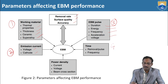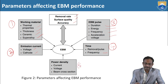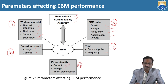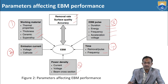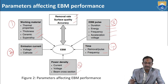The fourth parameter category is time, which includes removal of pulse and frequency. The fifth is power density, which includes current, voltage, and beam cross section. These three are important parameters of power density that influence the performance of electron beam machining.